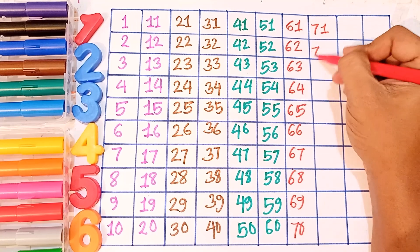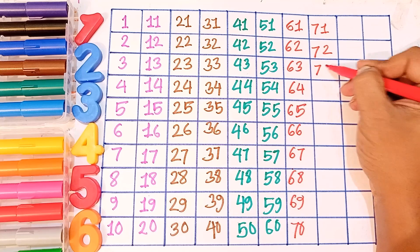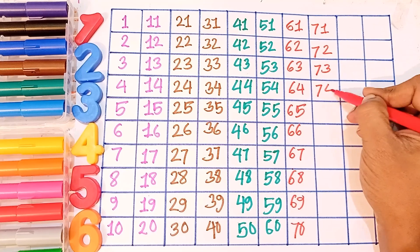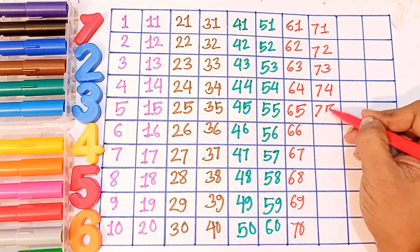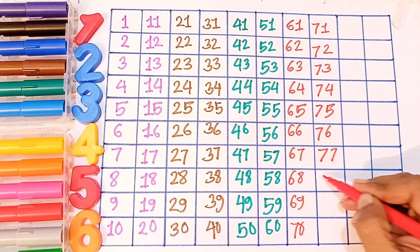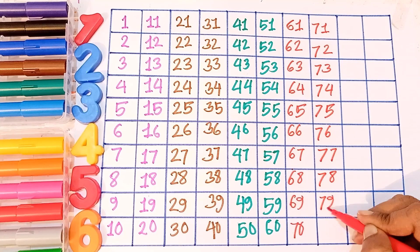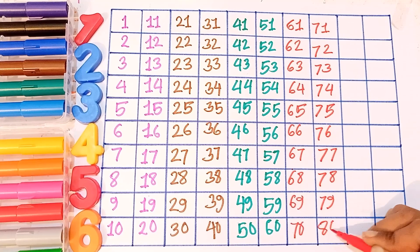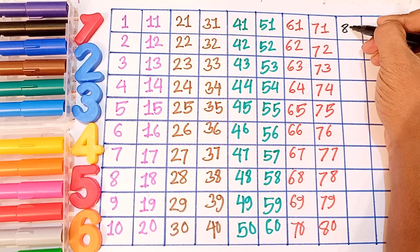Seventy-one, seventy-two, seventy-three, seventy-four, seventy-five, seventy-six, seventy-seven, seventy-eight, seventy-nine, eighty. Eighty-one.